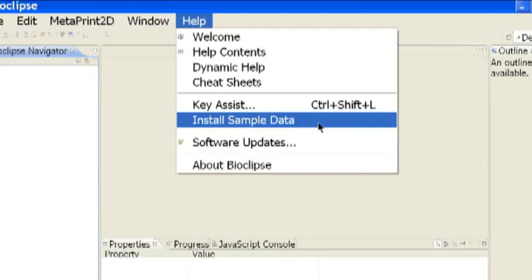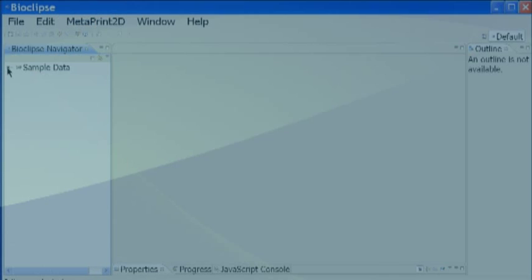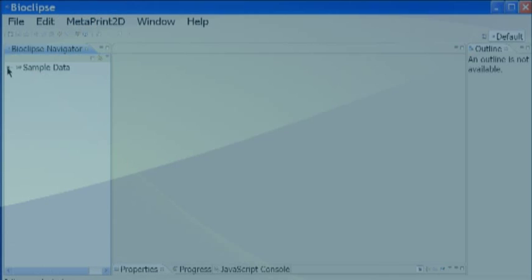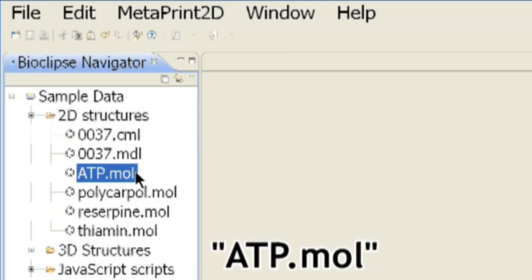Bioclipse can edit two-dimensional structures using JChemPaint. From the left navigator panel within the 2D structures folder, open ATP.mol to edit the triphosphate bond to a diphosphate bond.